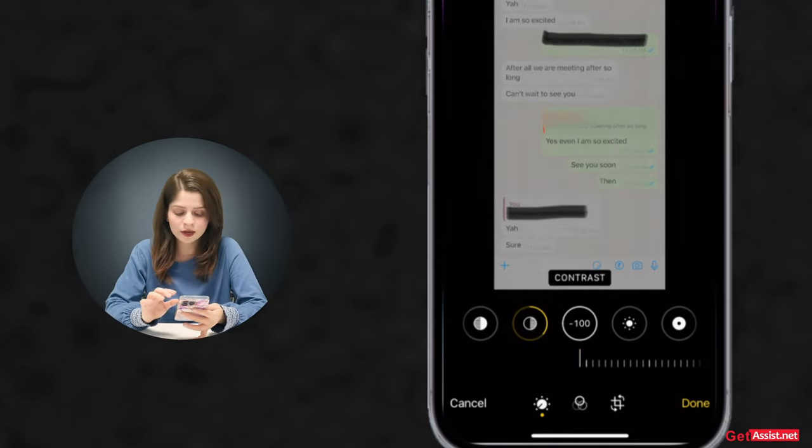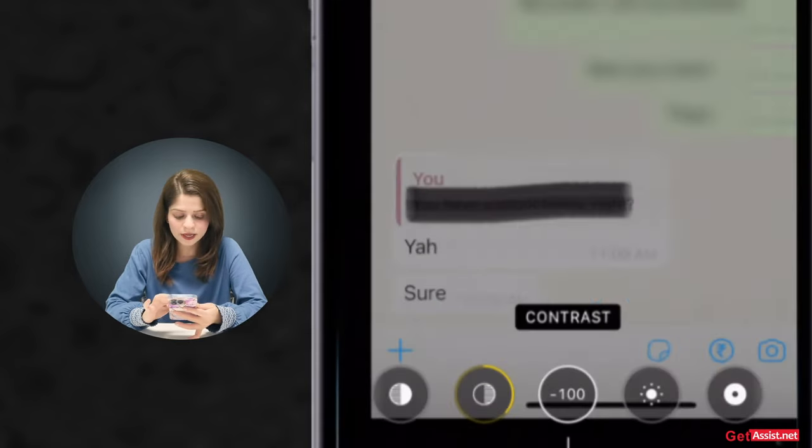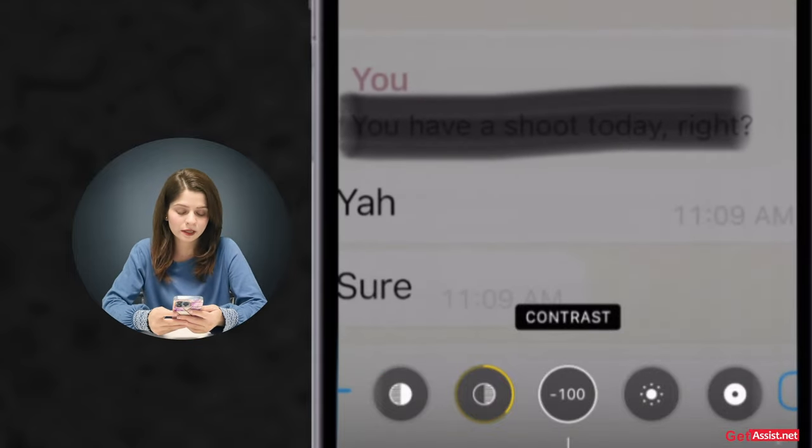So once you do that, if you zoom out the text, you will see that the text is now readable. That's the easy trick you can use to read blacked out text in screenshots, and that was it.